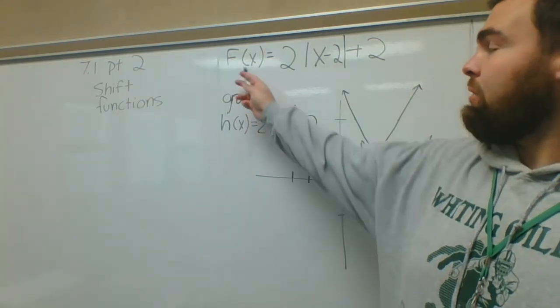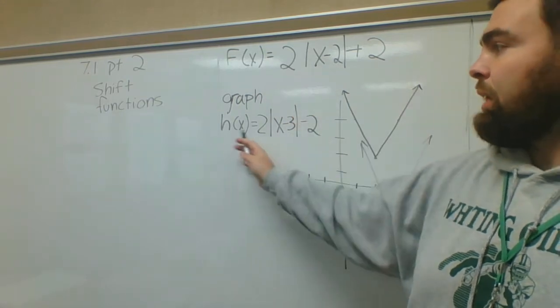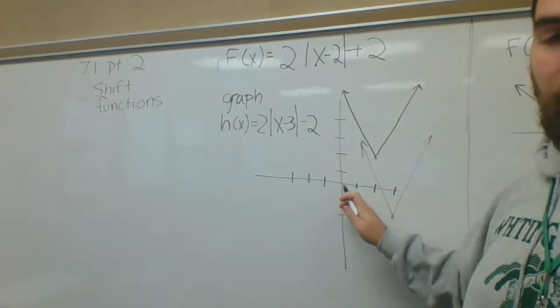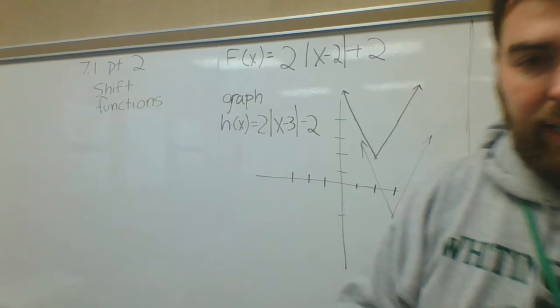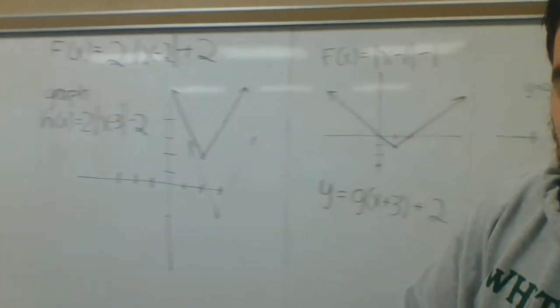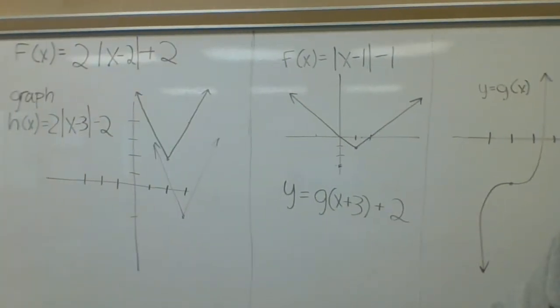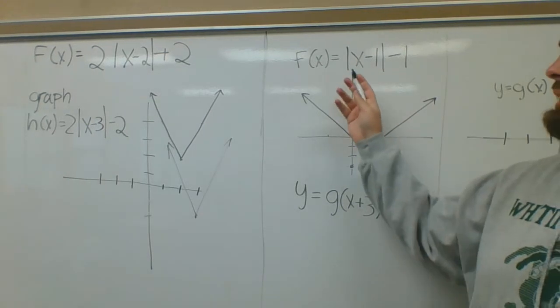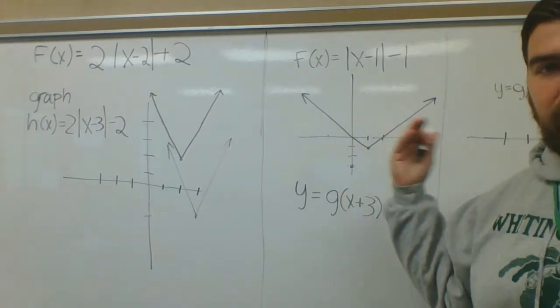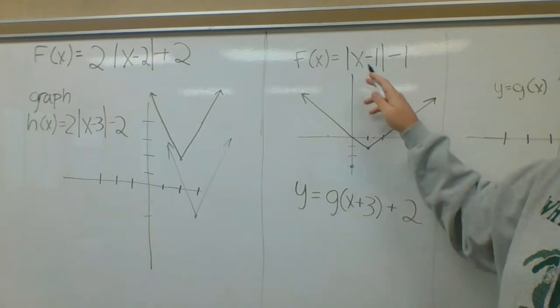We'll see a problem in a little bit that won't be from the origin. Notice that f(x) and h(x) I did from the origin. In a second example, I've got f(x) equals the absolute value of x minus 1 minus 1, so it's gonna go right 1 down 1, so that's where the vertex is.